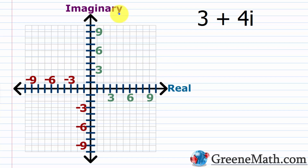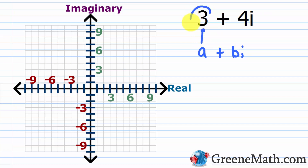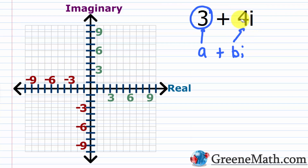Once you understand and commit those two things to memory, you should recall that a complex number follows the format a plus bi when it's in standard form. This number 'a' is the real part — in this case, three. This number 'b', the number that's multiplying i, the imaginary unit, is the imaginary part — so in this case that's going to be four, which is what's multiplying i.